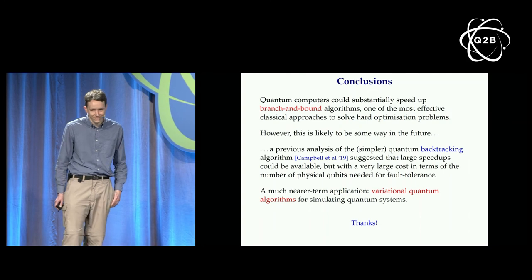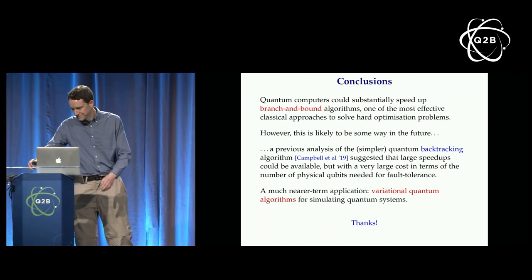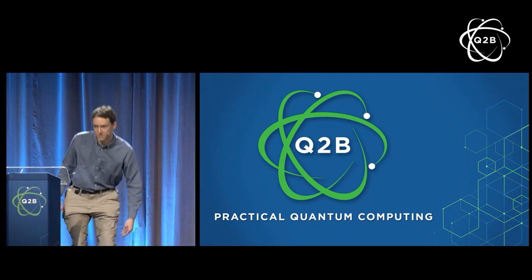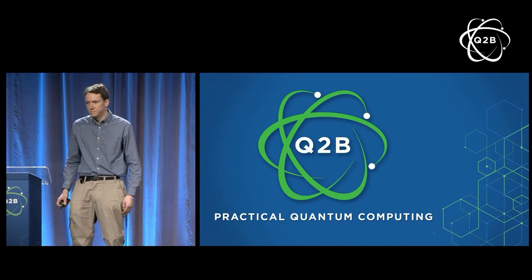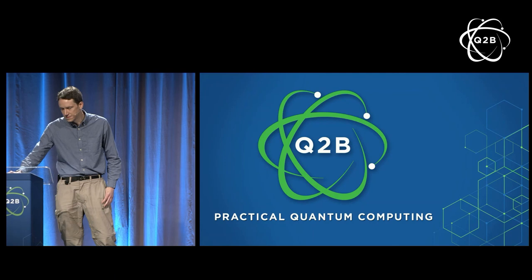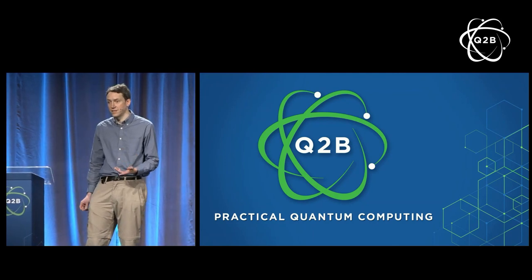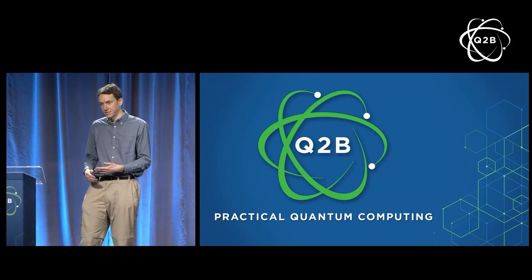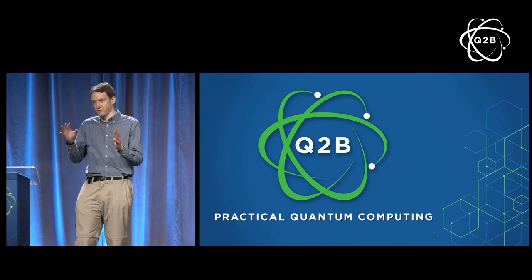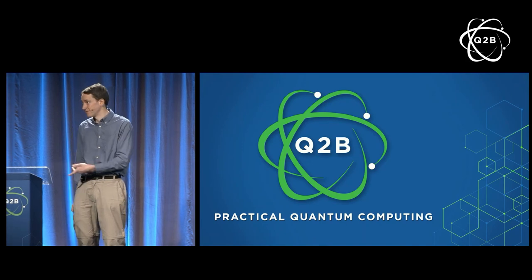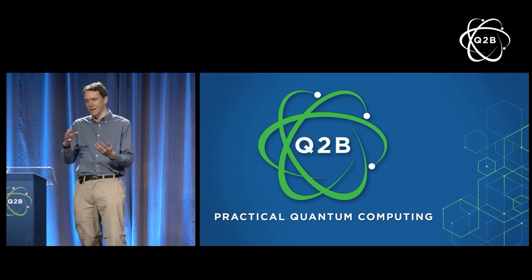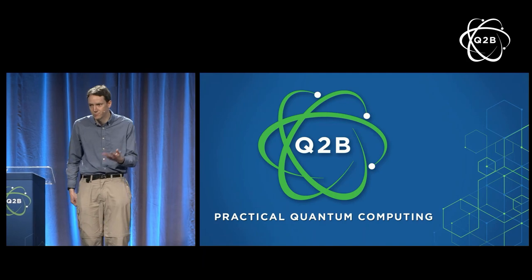Q&A: For the Ising problem, what is the classical complexity if you use branch and bound? What is the degree of quantum speedup — is it Grover? It's a Grover-style speedup, slightly sub-Grover because of lower-order terms, but the coefficient in the exponent follows a Grover-style square-root speedup. It's not actually Grover's algorithm, but a Grover-style square-root speedup. Interestingly, I don't think anyone had analyzed the classical branch and bound algorithm for this problem before — if they had, I could have just said the quantum algorithm gives a square-root speedup.